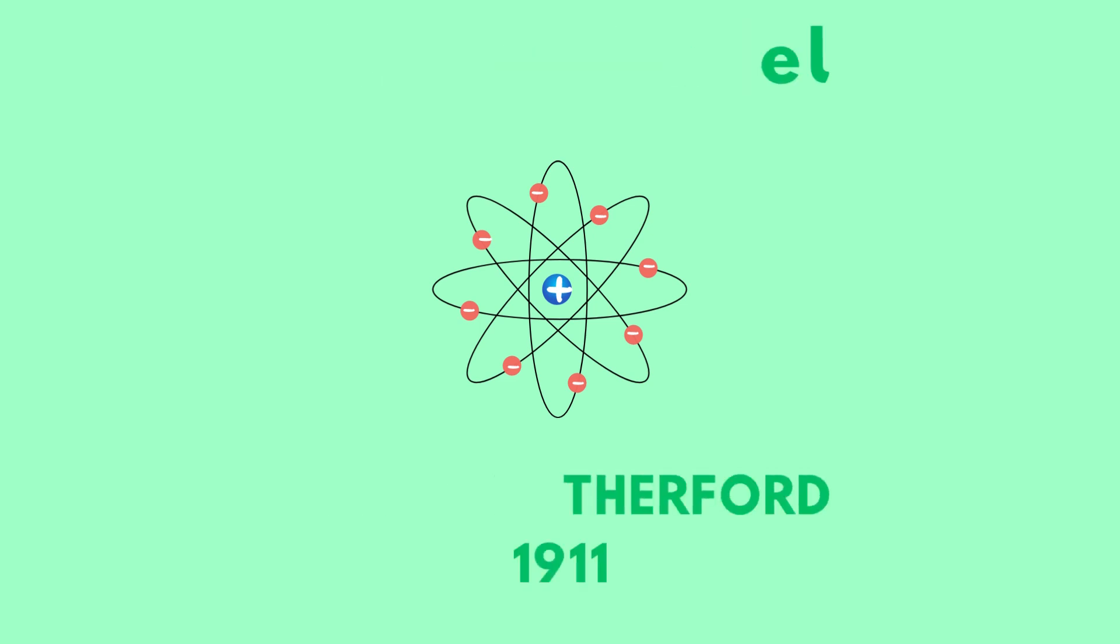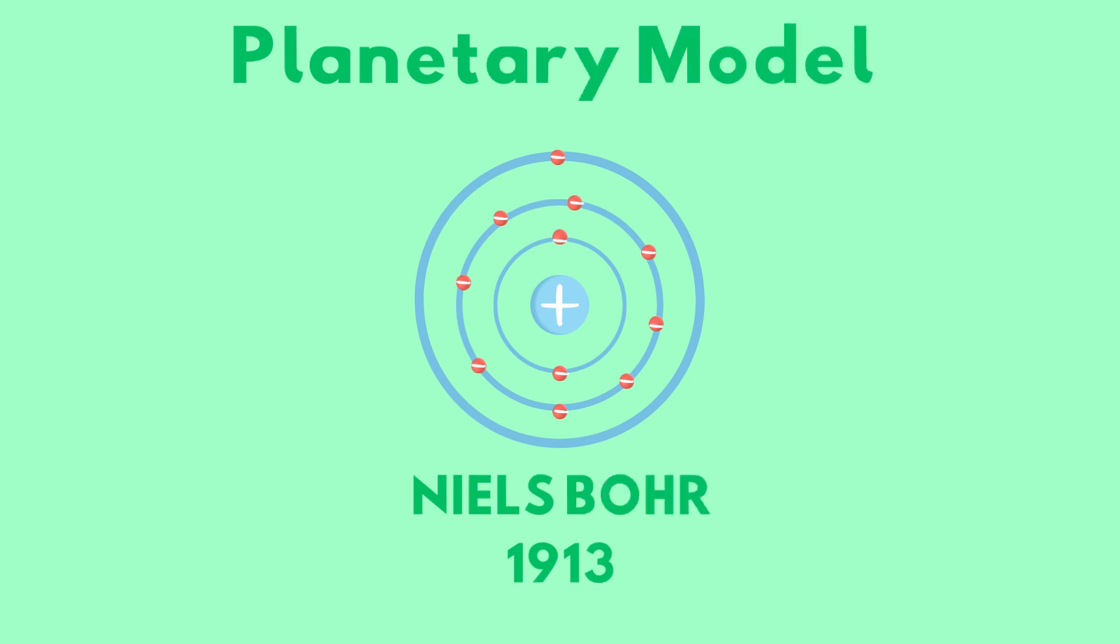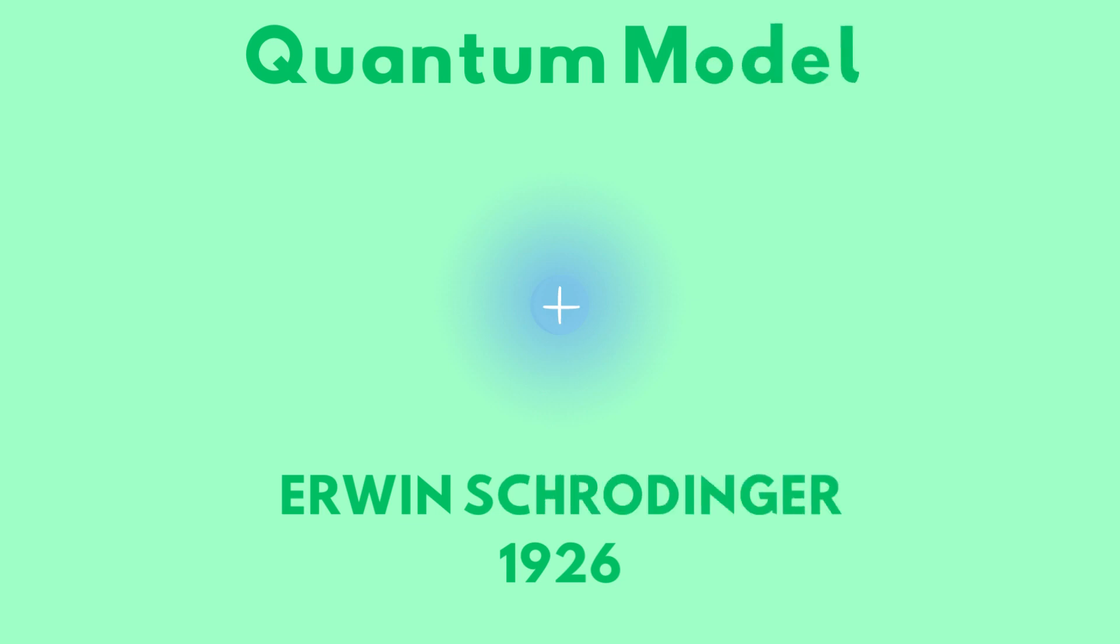The planetary model was found by Niels Bohr in 1913. The quantum model was found by Erwin Schrödinger in 1926.